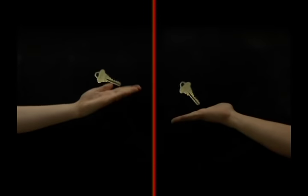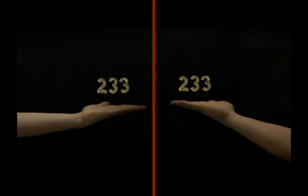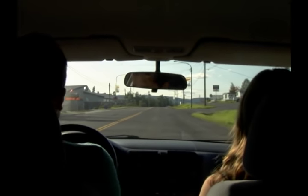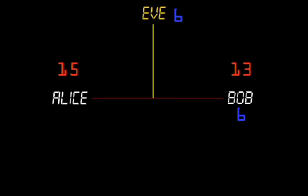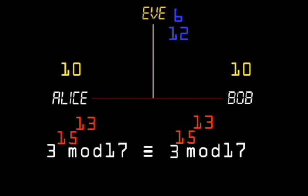So for Alice and Bob to communicate securely, they must first share identical keys. However, establishing a shared key is often impossible if Alice and Bob can't physically meet, or requires extra communications overhead when using the Diffie-Hellman key exchange.